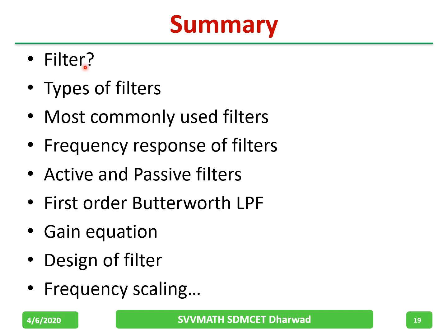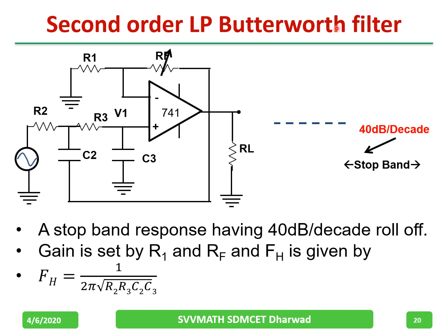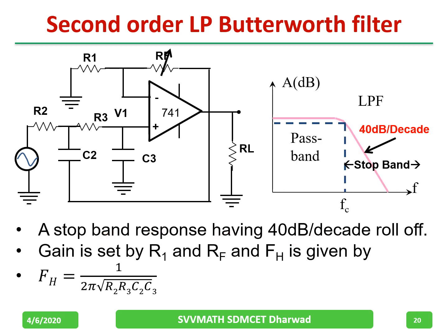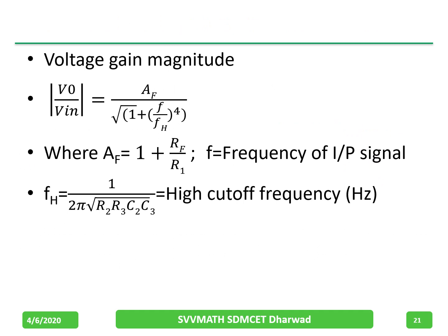In summary, part one covered: what a filter does, types of filters, commonly used filters, frequency response of filters, active and passive filters, first-order Butterworth filter, time-domain and frequency-domain gain equations, filter design, and frequency scaling. Now for the second-order Butterworth low pass filter: it uses two RC stages (RC-RC), giving a stop-band roll-off of 40 dB per decade. The cutoff frequency f_H is given by 1 divided by (2π times the square root of R2·R3·C2·C3).